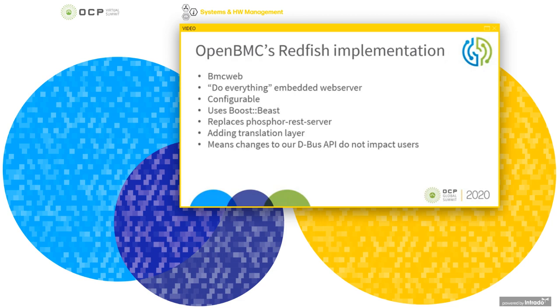OpenBMC's Redfish implementation: OpenBMC web is OpenBMC's web server, where support for Redfish is being added. The maintainers call it a do-everything embedded web server. Besides Redfish, BMC web enables virtual media and KVM via WebSocket. It exposes the D-Bus interfaces to REST and hosts the static files for the web interface. BMC web uses Boost Beast, moving away from Crow.